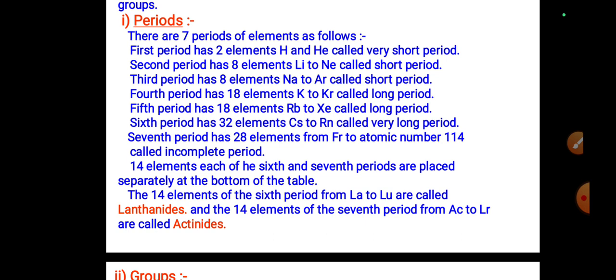There are seven periods. The first period has two elements — hydrogen and helium — called the very short period. The second period has eight elements, lithium to neon, called the short period. The third period has eight elements, sodium to argon, called the short period. The fourth period has 18 elements, potassium to krypton, called the long period. The fifth period has 18 elements and is also called the long period.